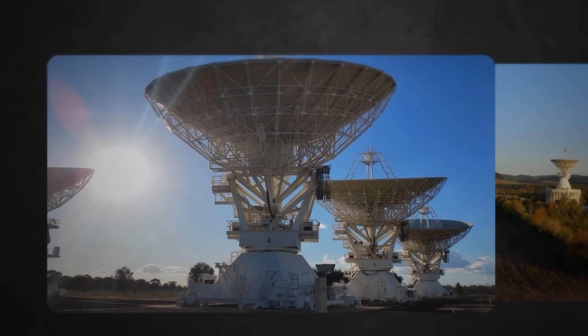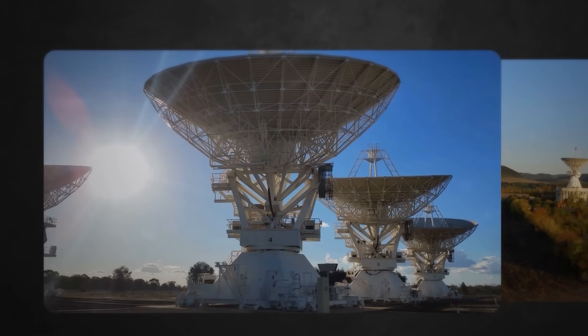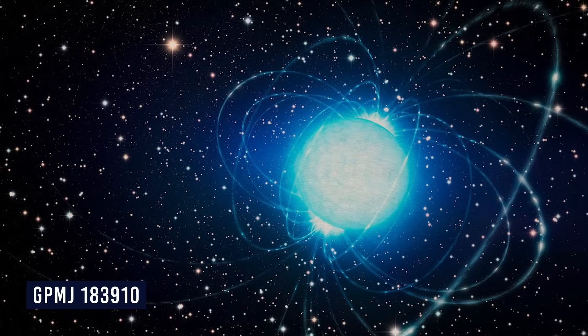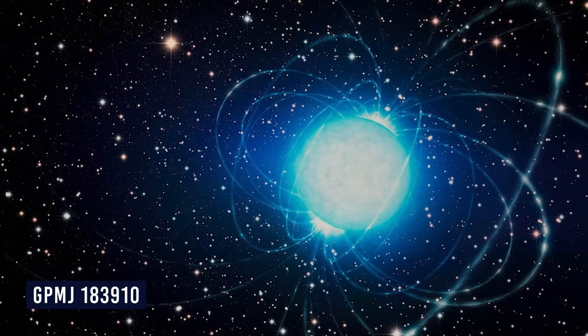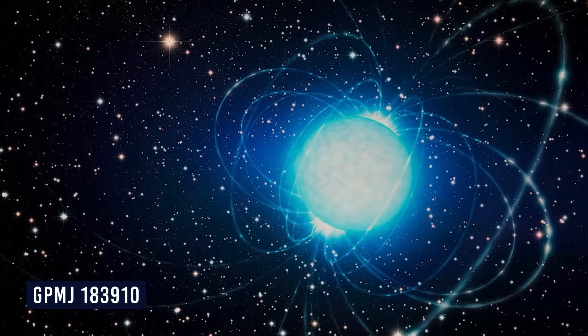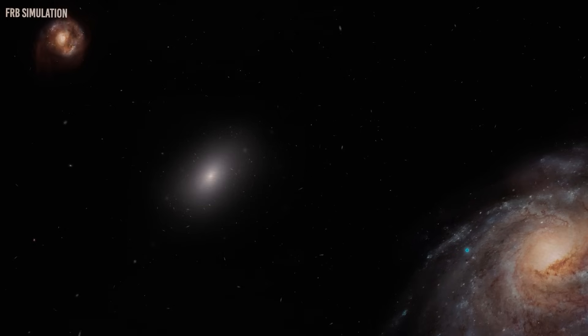However, they assume it might be an extremely slow-moving magnetar. The distance to the object, designated GPMJ 183910, is roughly 15,000 light-years. In circumstances such as these, the object will typically emit radio wave pulses approximately once every second. This is far too sluggish.